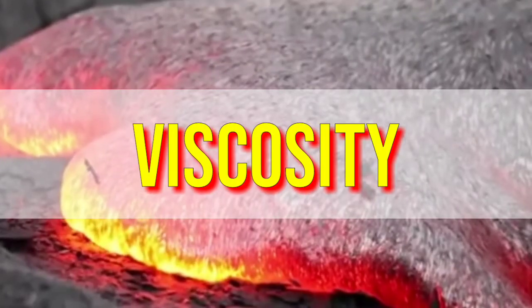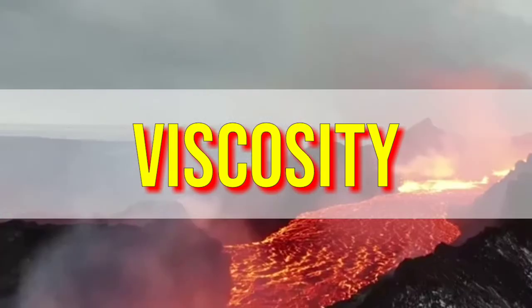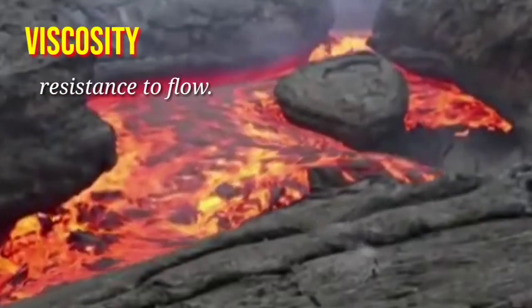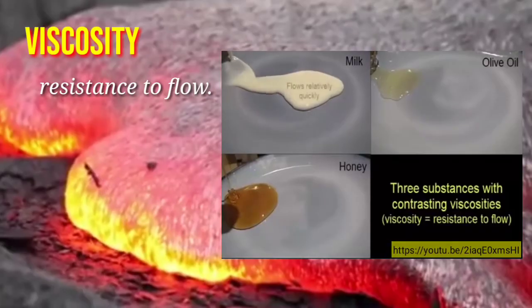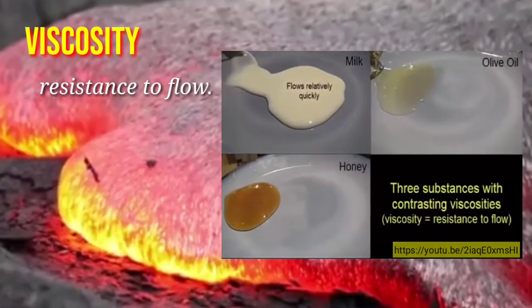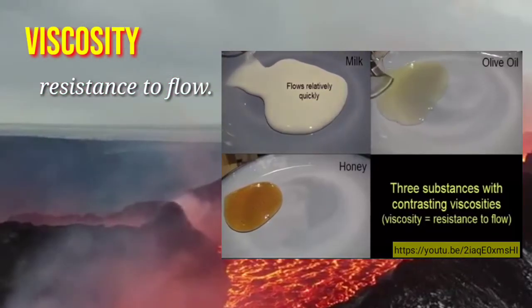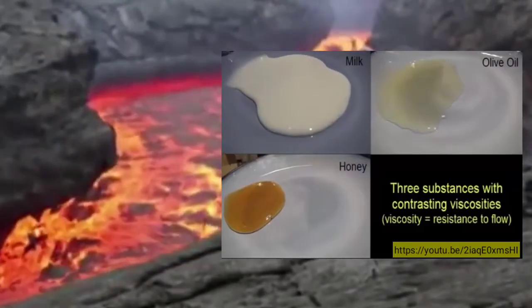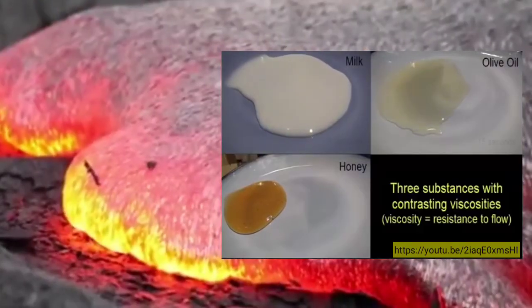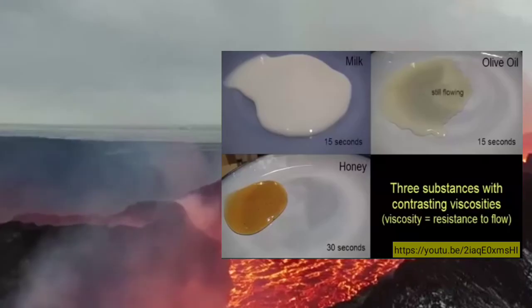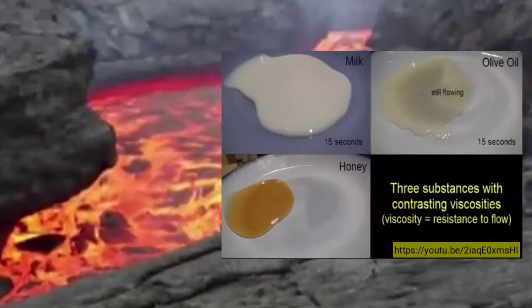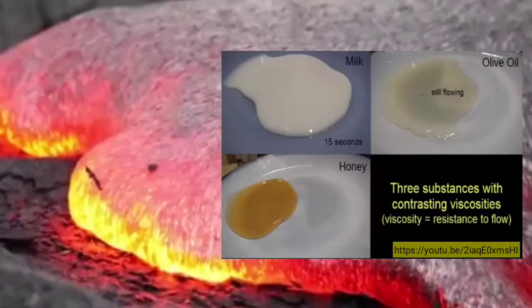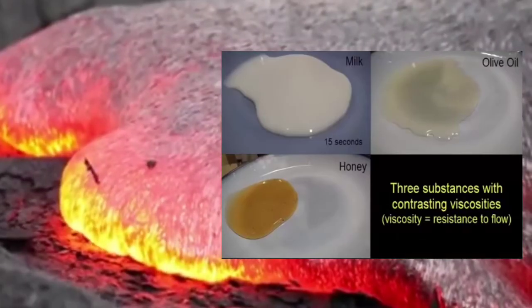Viscosity also affects the eruptive style of a volcano. Viscosity refers to the resistance of a substance to flow. Liquids that flow easily, like water, have a very low viscosity. For example, we have honey, milk, and olive oil. Honey has a very high viscosity, while milk and olive oil have a very low viscosity because they flow easily.